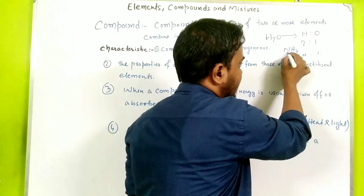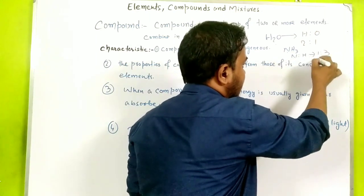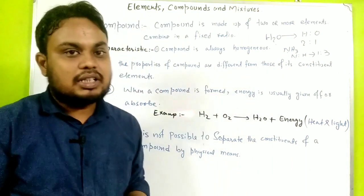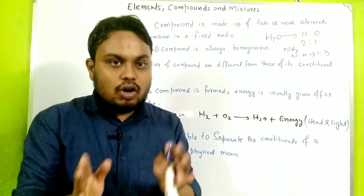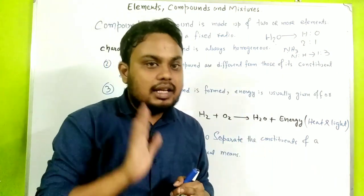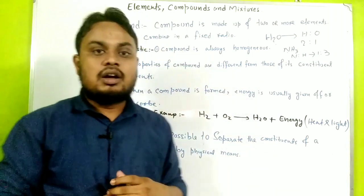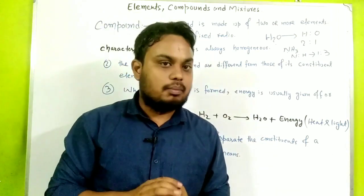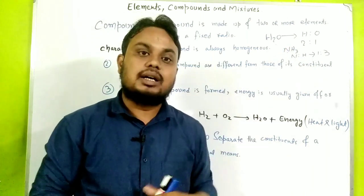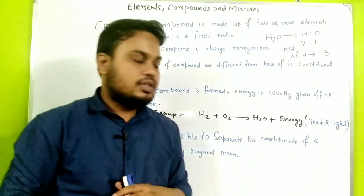Another example is NH₃ — here nitrogen and hydrogen are combined in a 1:3 ratio. One nitrogen atom and three hydrogen atoms combine in a fixed ratio to produce a compound. These are key definitions with examples of compounds.